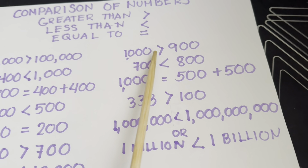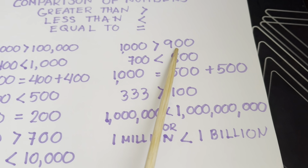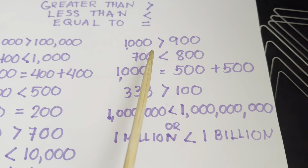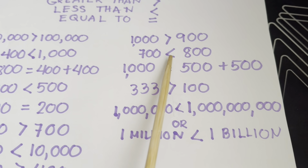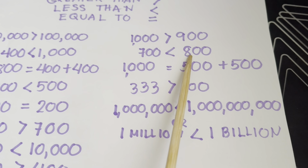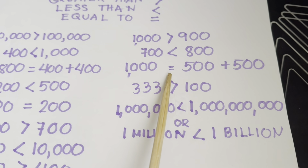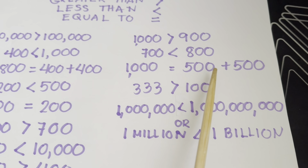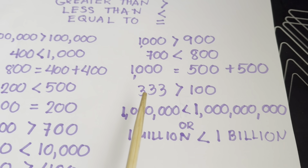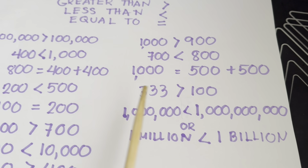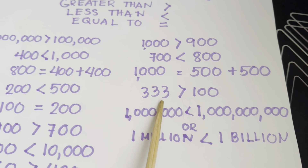Next, one thousand is greater than nine hundred. Seven hundred is less than eight hundred. One thousand is equals to five hundred plus five hundred, same as one thousand is equals to one thousand.